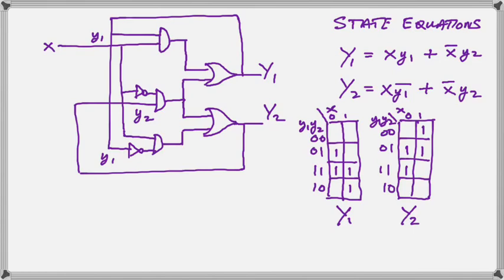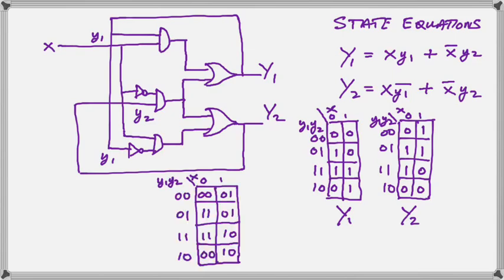Well, if it's not a one, it has to be a zero. So we fill in the zeros. And the next thing we do to create the transition table is to combine the y1 and y2 as you can see.